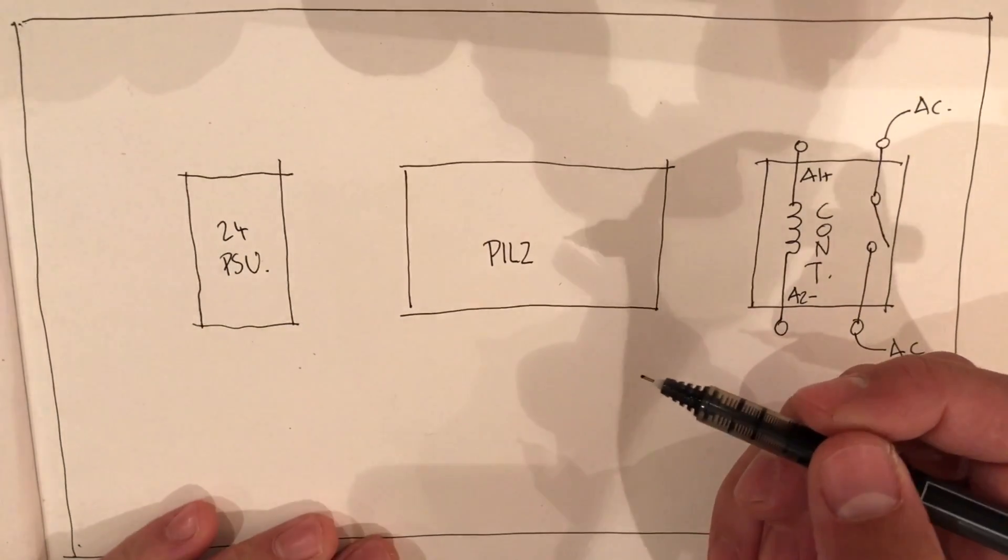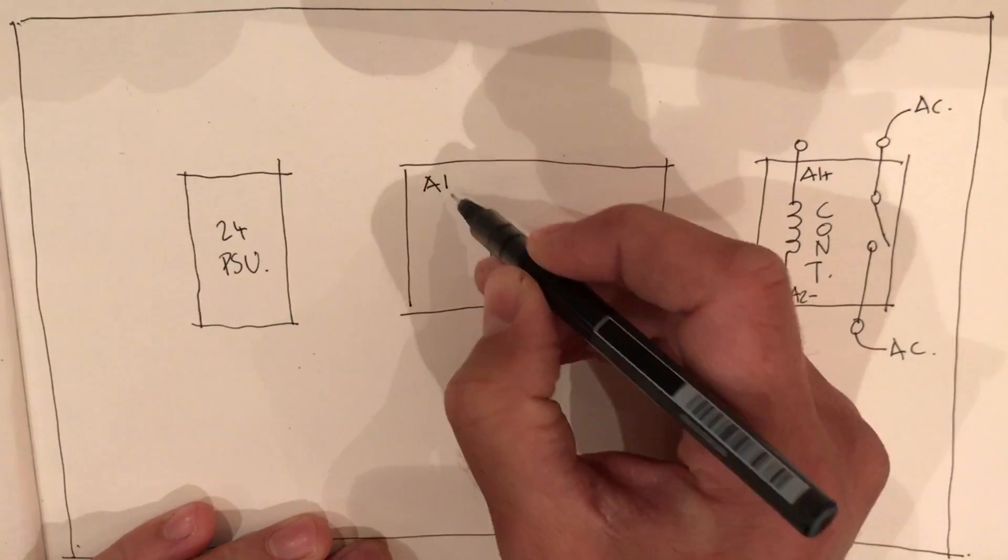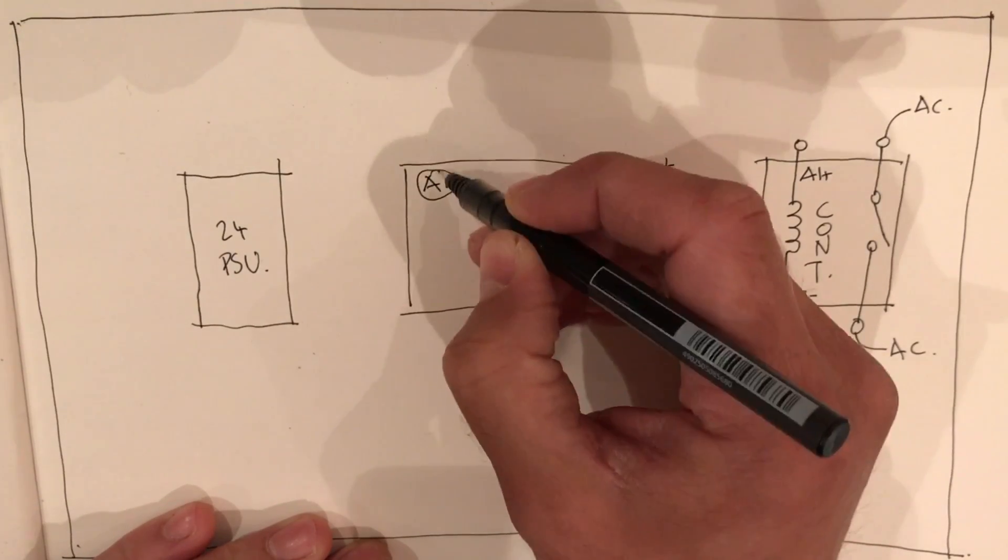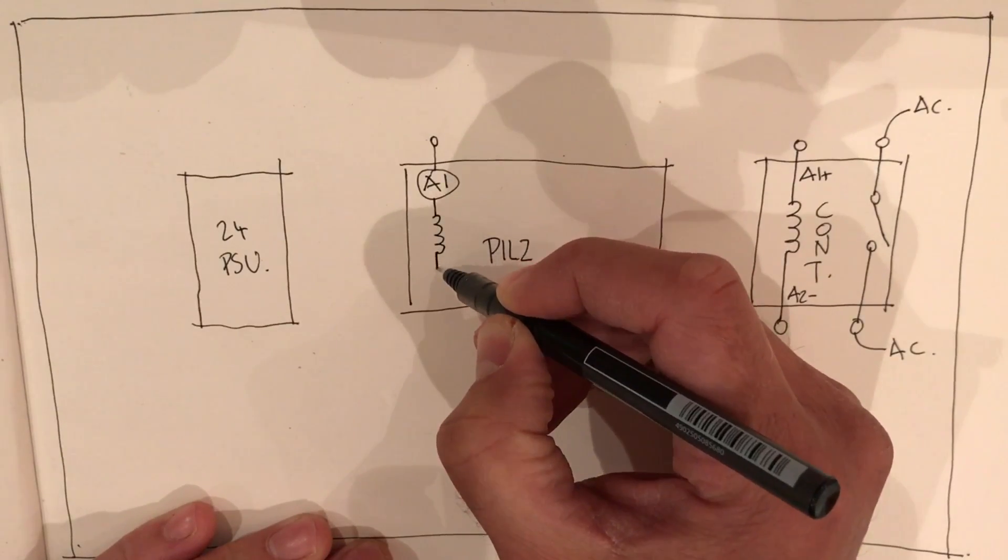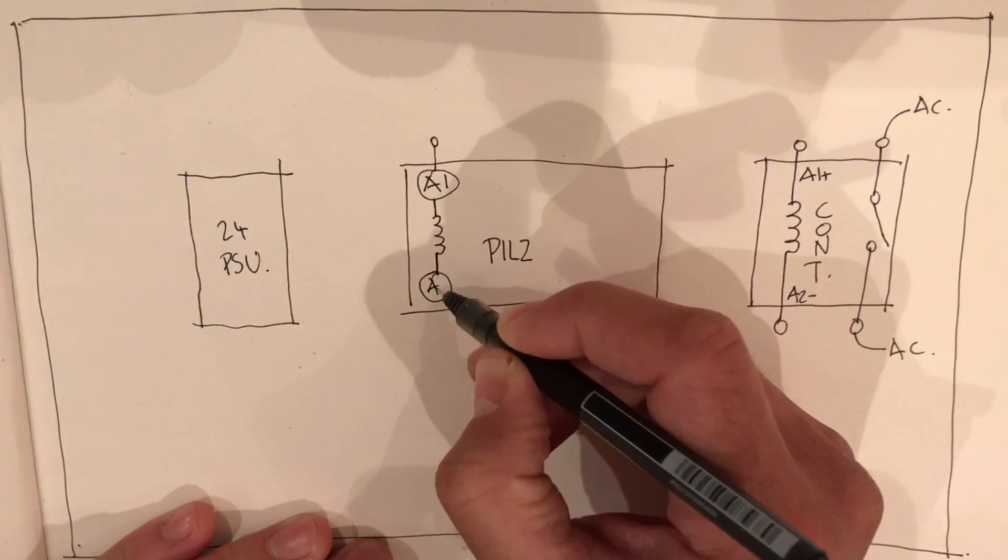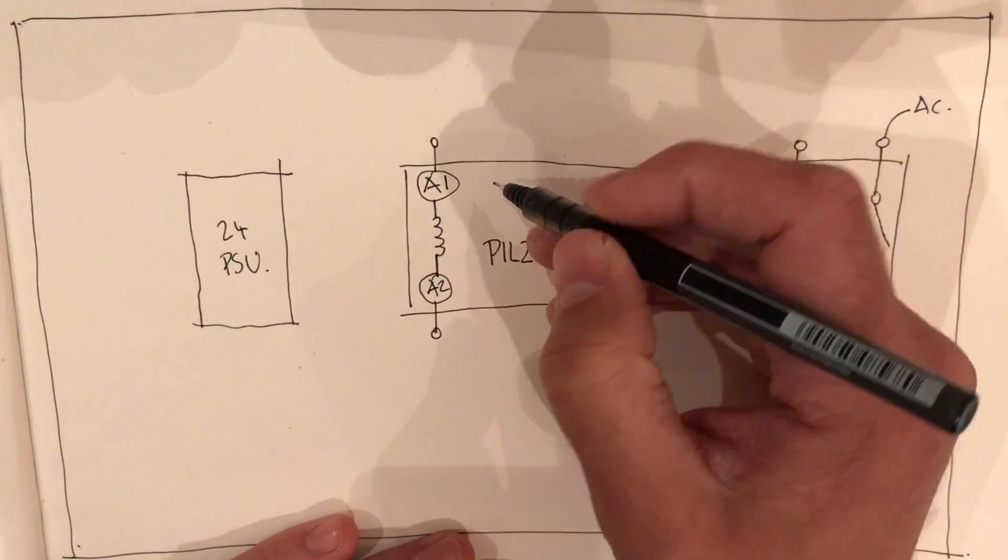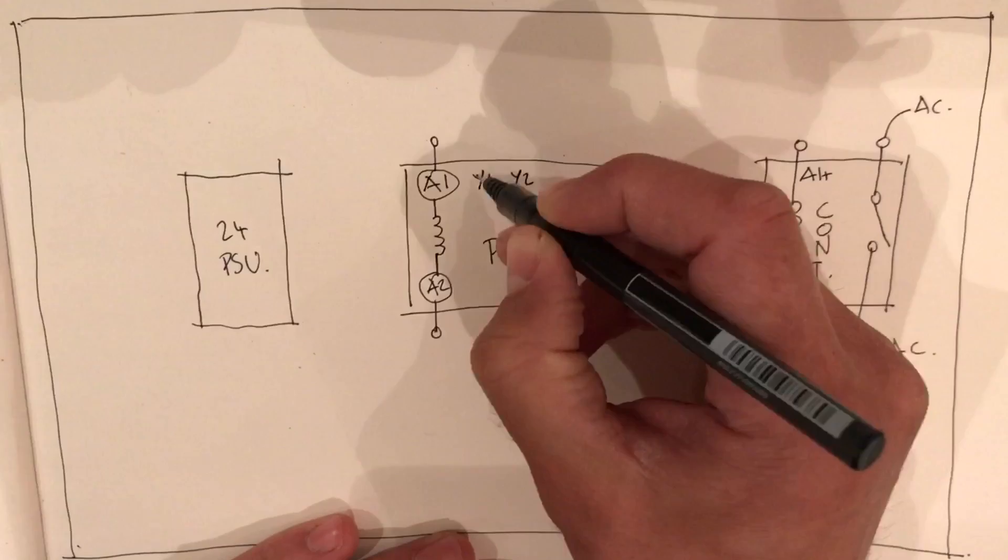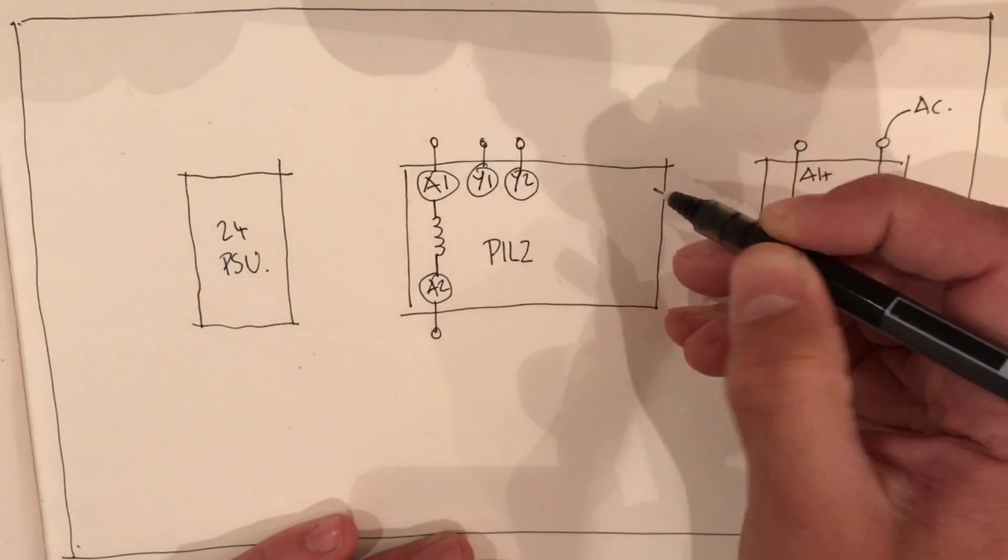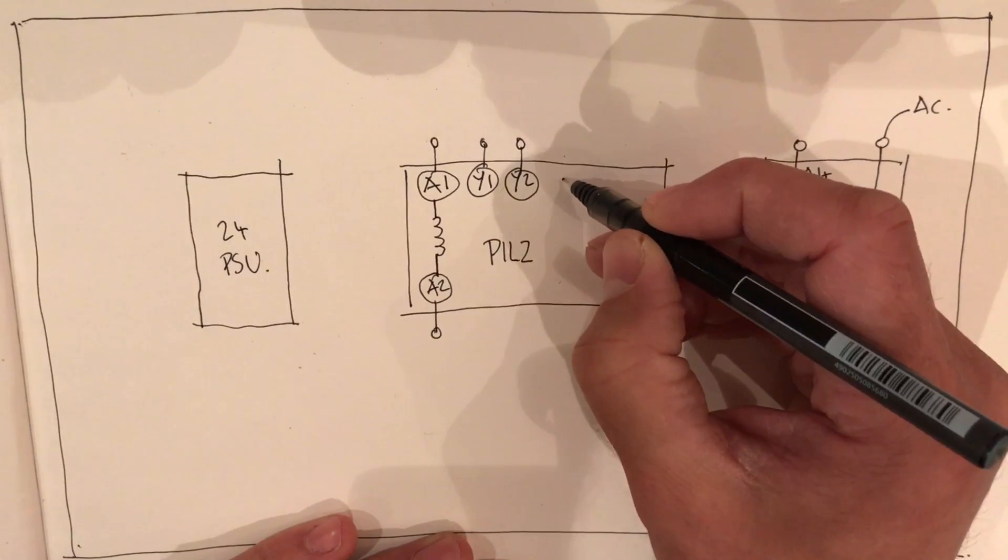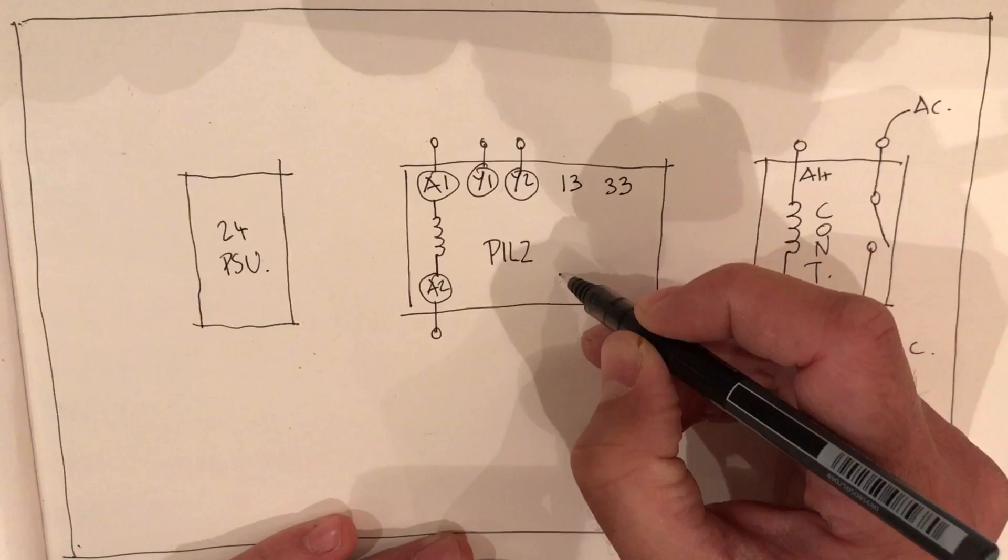For the Pilz, we've got the main coil between A1 and A2, the reset which is Y1 and Y2, and then we're going to use 13 and 33 of the switches.